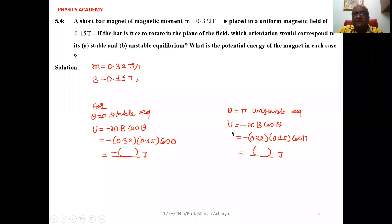So U' = -(0.32)(0.15) cos π. The magnitudes are the same, but for stable equilibrium the potential energy is minimum with a negative sign, while for unstable equilibrium the potential energy is maximum, equal to +mB.